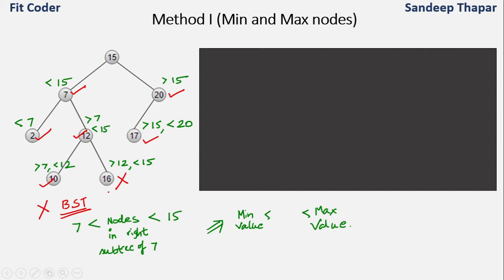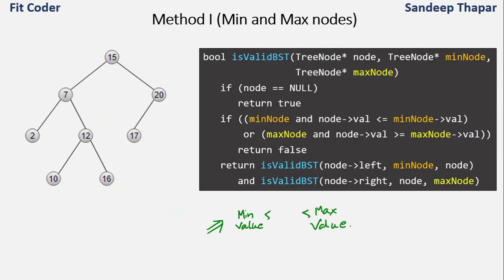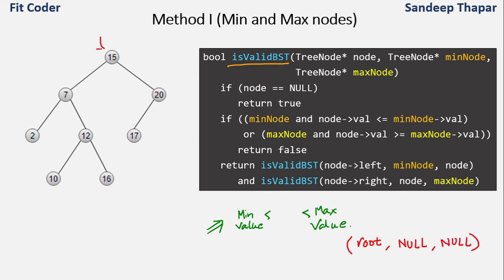Now let's check the pseudocode. We have the function isValidBST which takes three parameters: a node, a min node, and a max node. The first call to this function is for the root of the tree, with min node as null and max node as null. So 15 is the root, and the parameters are 15, null, and null. We check if the node is null — this is the base condition.